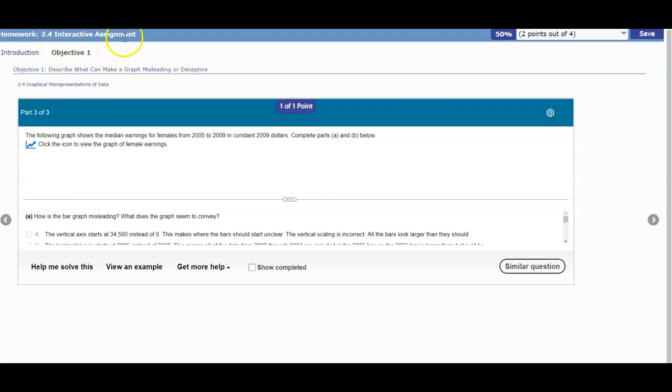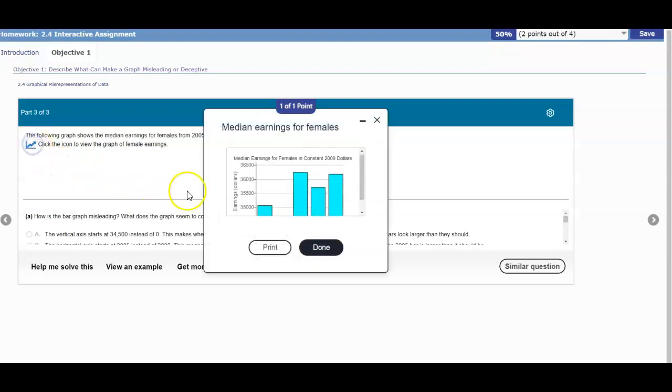Section 2.4 Interactive Assignment, Objective 1. The following graph shows the median earnings for females from 2005 to 2009 in constant 2009 dollars. We're going to complete parts A and B below. When we click on the icon, we're going to see what this picture looks like.